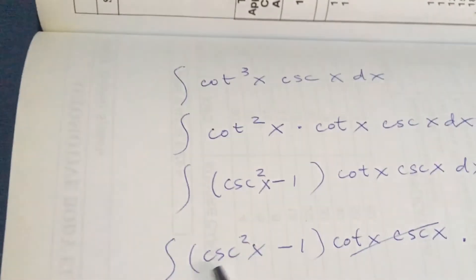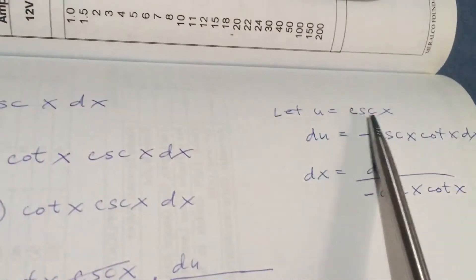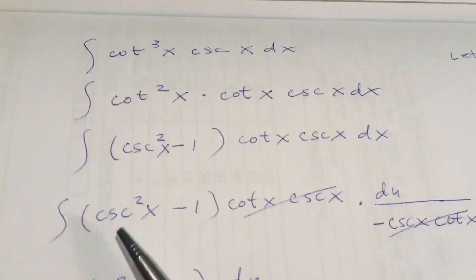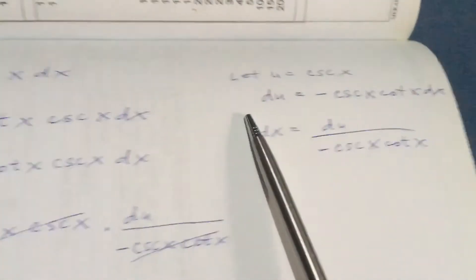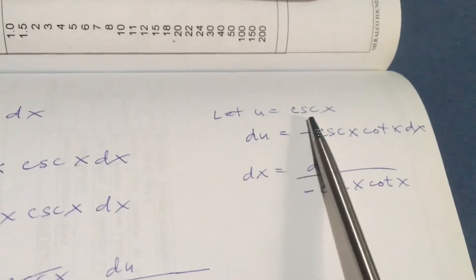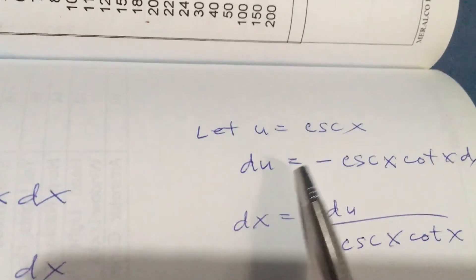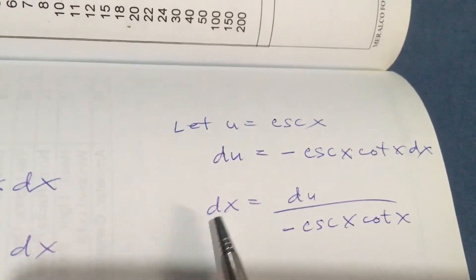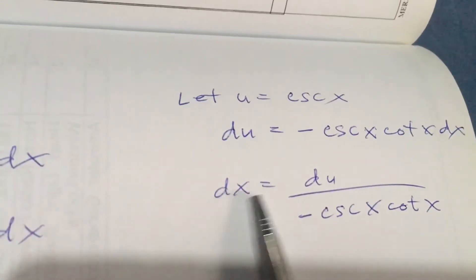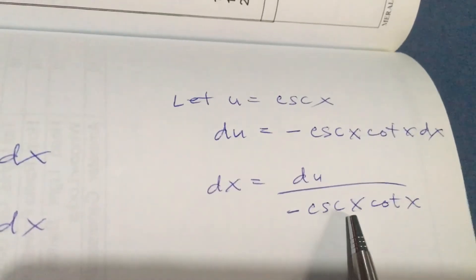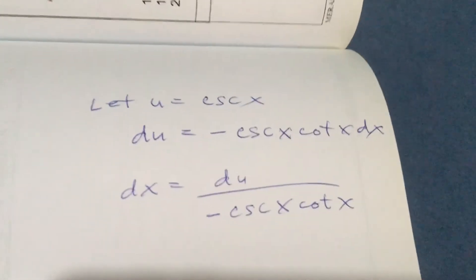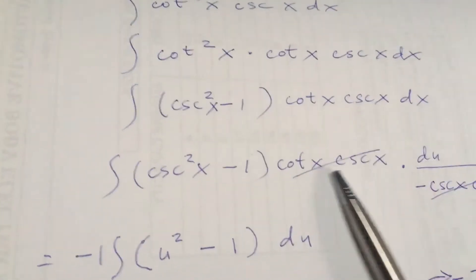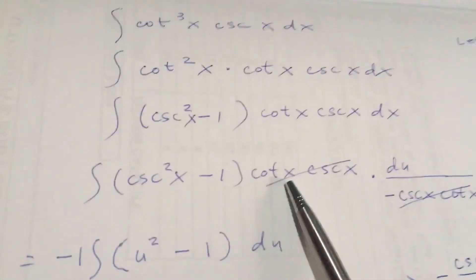Getting back to the lecture, we will assign u as the cosecant. Let u equal cosecant x, then get the derivative: the derivative of cosecant x is negative cosecant x cotangent x dx. Solving for dx, the equivalent is du over negative cosecant x cotangent x.